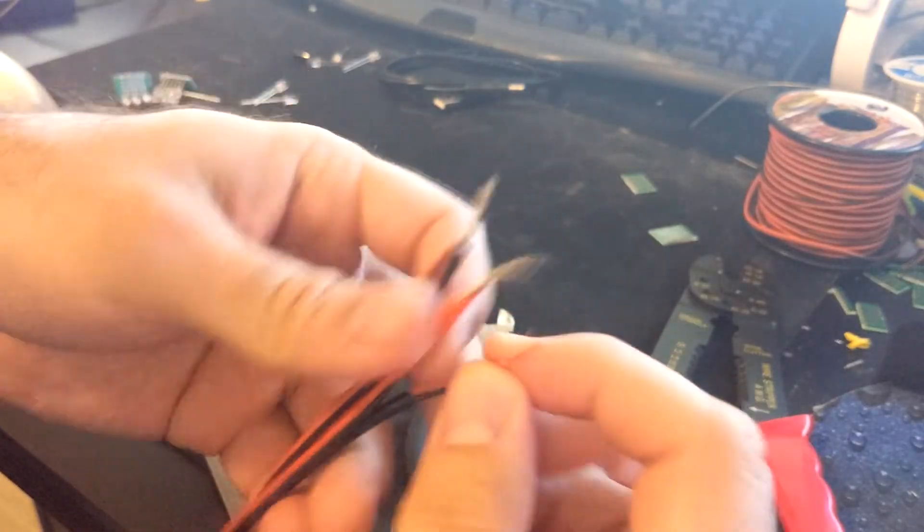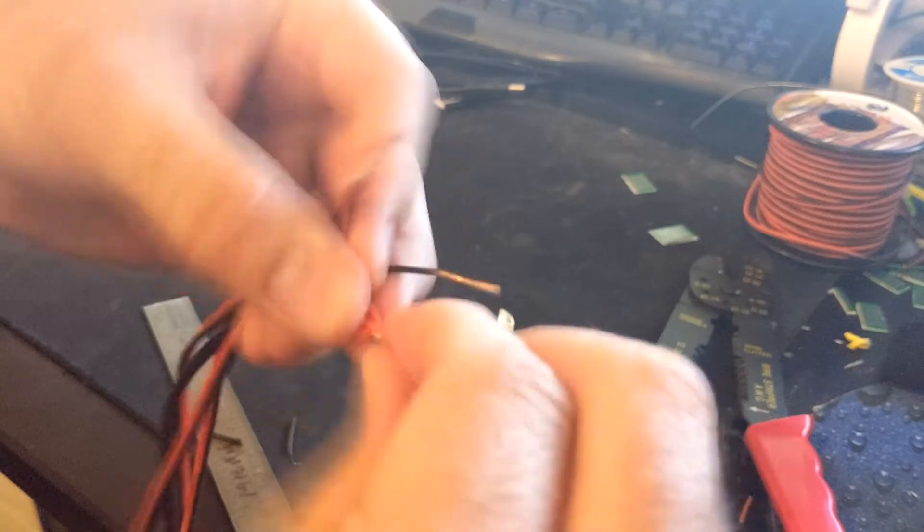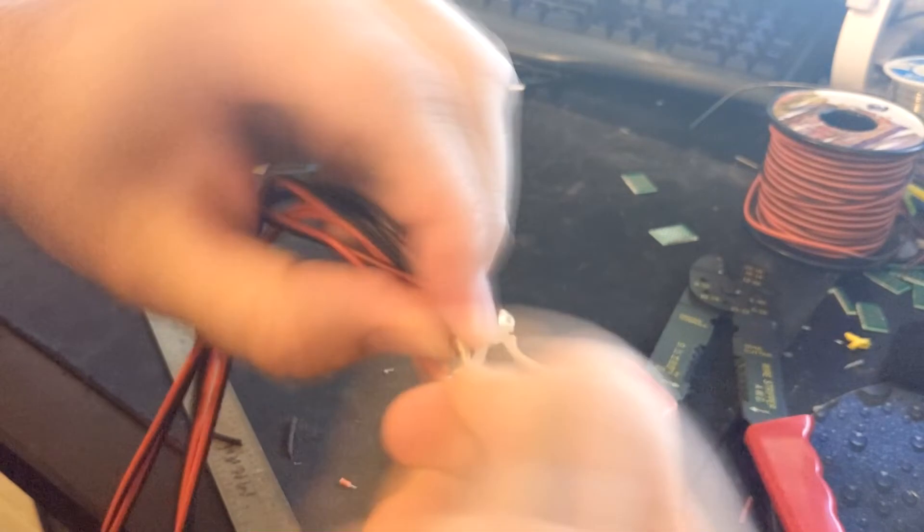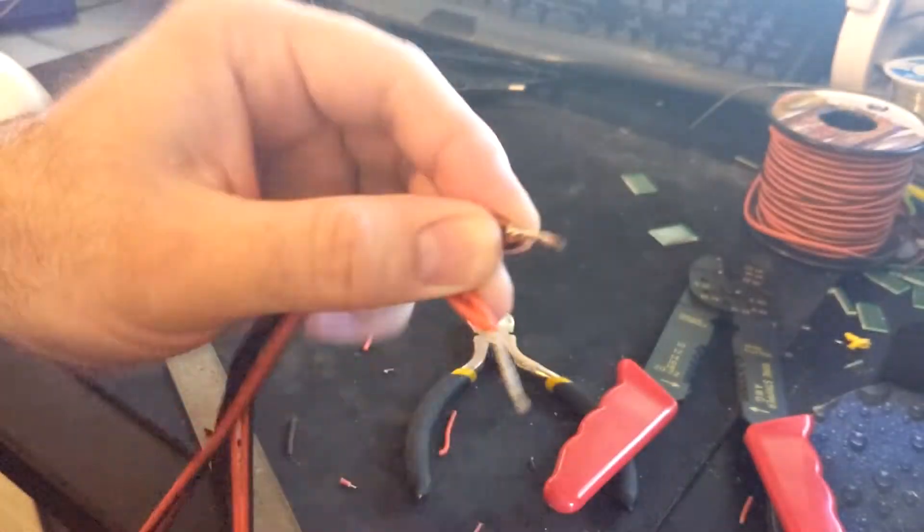Now twist the wires onto the set of wires we just twisted. Red to red, black to black. Should look like this.